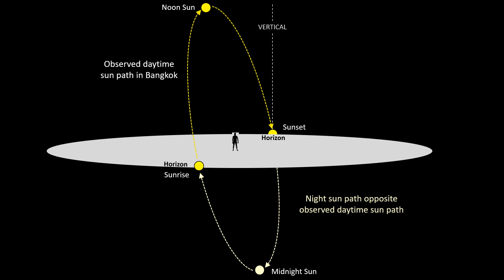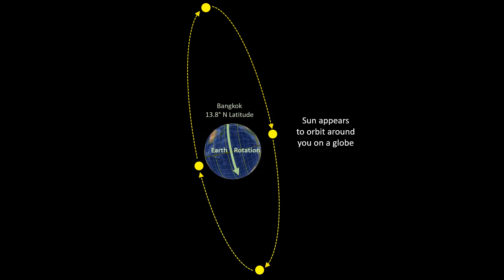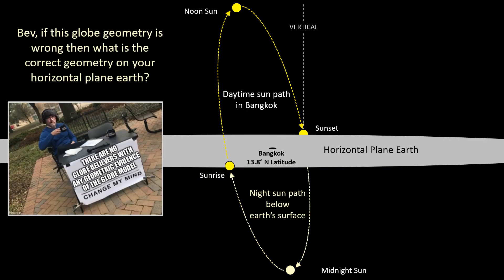My step-grandson was even able to figure this out when he was six years old. And this definitely works on a globe, because Earth's rotation makes it appear as though the sun is orbiting around you. So, Bev, here's the geometry of the Bangkok sun on your horizontal plane Earth. And if you don't think the sun goes below the Earth's surface at night, then what is the correct geometry?